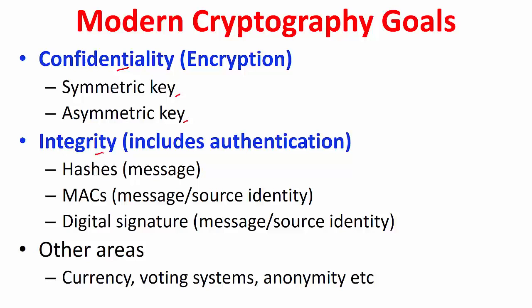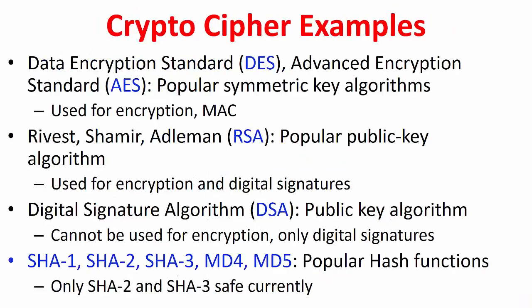Modern cryptography also handles integrity — not just message integrity but also source integrity, which we often call authentication. This is achieved via hashes, MACs, and digital signatures, which we will cover in detail later. Modern cryptography is also used for currency purposes, e-voting, providing anonymity, and so on. There are many standards that cater to confidentiality and integrity. DES, which stands for Data Encryption Standard, and AES, which stands for Advanced Encryption Standard, are popular symmetric key algorithms used for encryption and MACs — MAC being one that provides authentication.